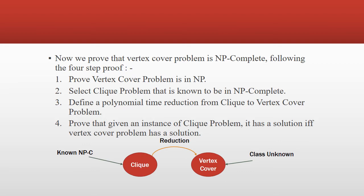We will prove that the vertex cover problem is NP-complete using a four-step proof. Step one: prove that vertex cover is in NP. Step two: select the clique problem, which is already known to be NP-complete. Step three: define a polynomial time reduction from the clique problem to the vertex cover problem. Step four: prove that an instance of the clique problem has a solution if and only if the vertex cover problem has a solution.